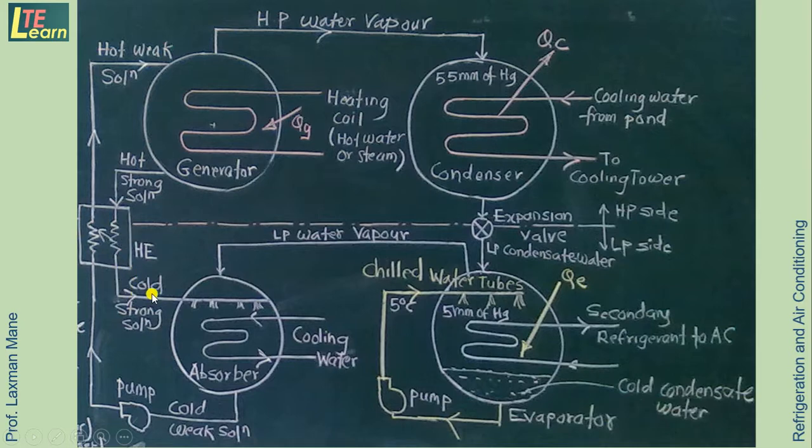It comes through the heat exchanger and becomes cold. So this cold strong solution of Lithium Bromide and water vapor are mixed together thus it forms cold weak solution. This cold weak solution is pumped through this heat exchanger to the generator.